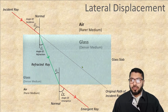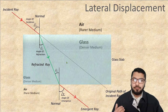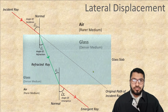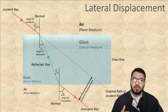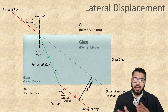Now you can see the difference between the two paths: this is the original path the ray would take if there is no medium involved, that is, if there is no glass slab. That shift in the light ray — the shifting difference between the emergent ray and the original path — is what we call lateral displacement. So lateral displacement is basically the difference between the emergent ray and the original path of the ray.